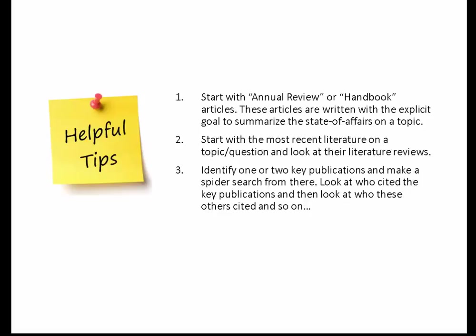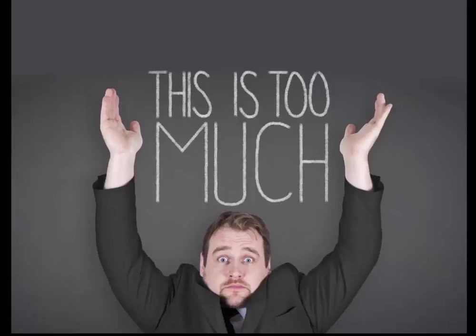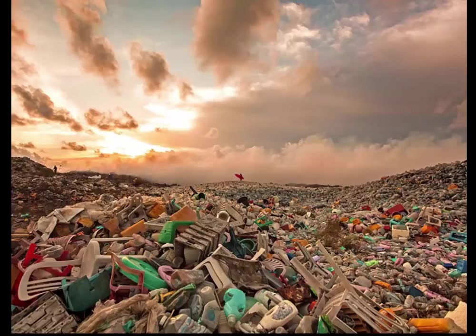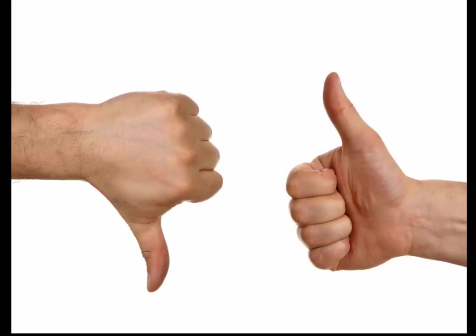Also, identify one or two key publications and make a spider search from that. But very quickly when you type something into a search engine you get 10,000 results — you can't possibly read through all 10,000 articles. So you need to filter and evaluate this somehow. Also because there's a whole lot of rubbish out there. Nowadays being published doesn't necessarily mean it's good — there's an awful amount of crappy journals out there. So what are the strategies to find the good stuff? How can you find good research?